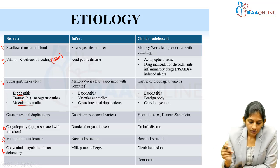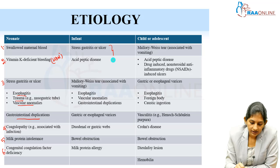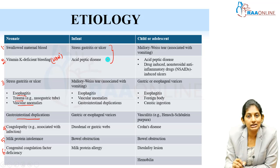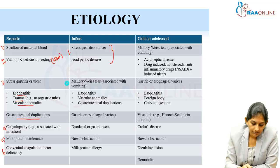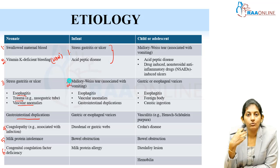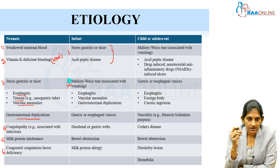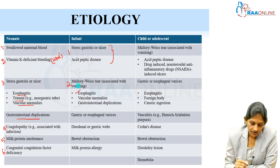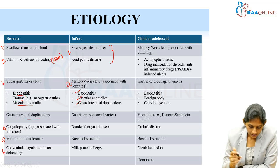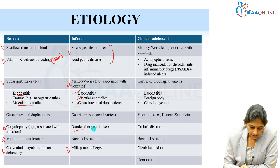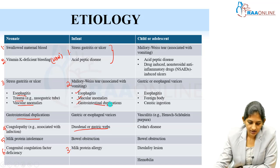For infants, think of stress ulcers or acid peptic disease. Next is Mallory-Weiss tear — was there any forceful retching when the child was vomiting? Also consider esophagitis, vascular anomalies or duplications. Further, milk protein allergies, duodenal or gastric webs, and duplications have to be considered.